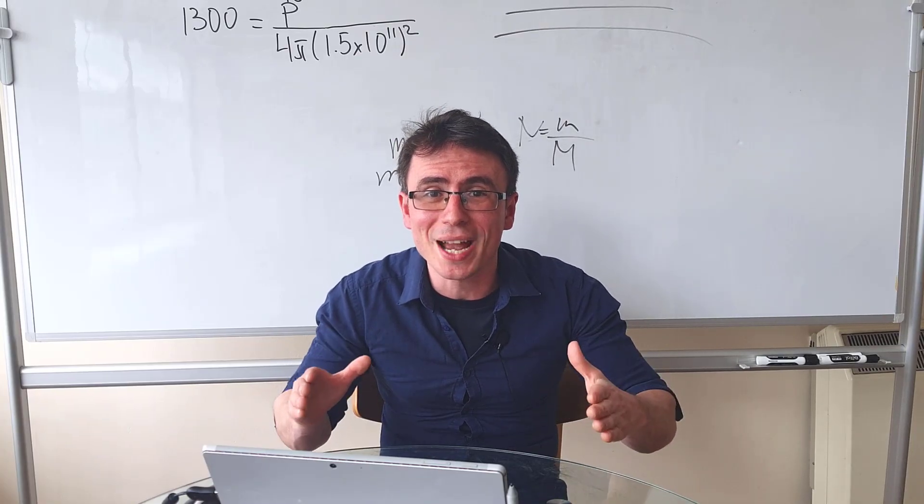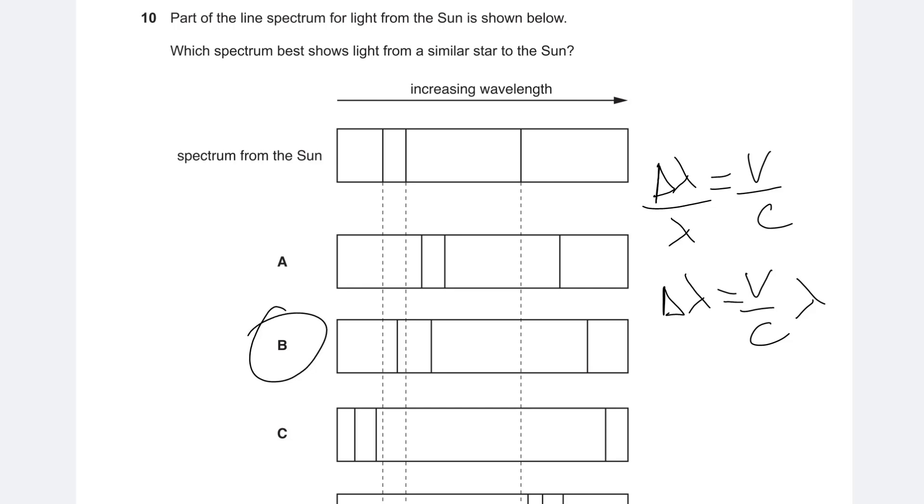Redshift is fractional. Larger wavelengths have a higher shift as it is proportional to the wavelength.